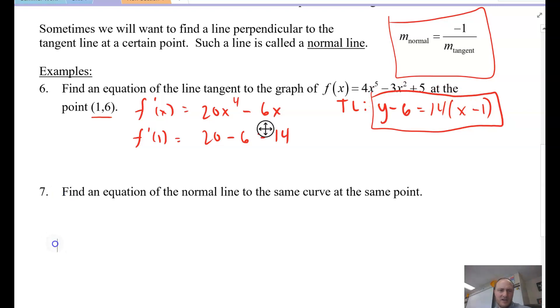Number seven, find the equation of the normal line to the same curve at the same point. Well, if I know that the slope of my tangent line is equal to 14, then the slope of my normal line is going to be the opposite reciprocal, so negative 1/14. So it's literally the same exact equation. You just adjust your slope. y minus 6 equals negative 1/14 x minus 1. That's it. There's a differentiation with using power rule, constant rule, scalar multiple rule, and don't tell me, don't tell me, the sum rule. So there's differentiation, making a line. In the next videos, we'll talk about non-differentiability and rate of change. Peace.